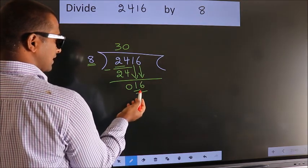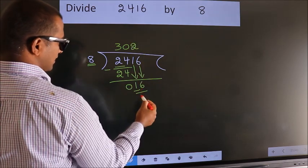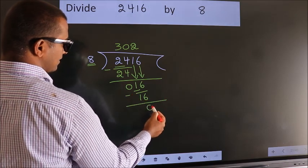When do we get 16? In the 8 table: 8 times 2 is 16. Now we subtract and get 0.